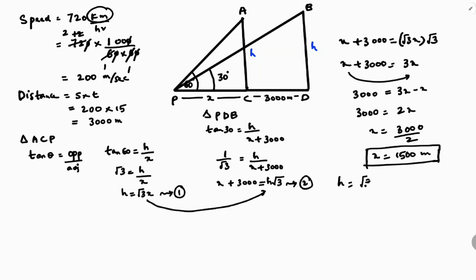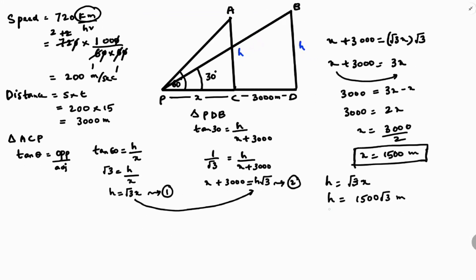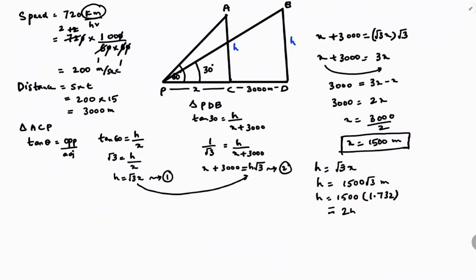Now substituting back, h = √3·x = √3 × 1500. The question gives √3 = 1.732, so h = 1500 × 1.732 = 2598 meters. So the constant height of the plane is 2598 meters.